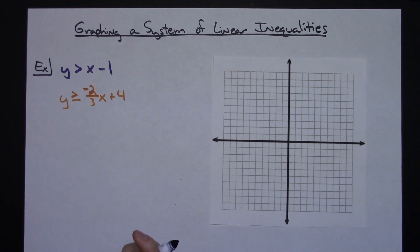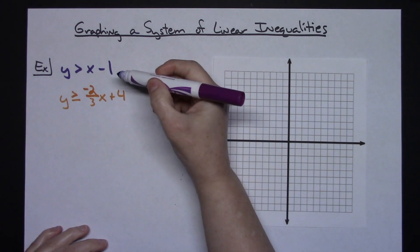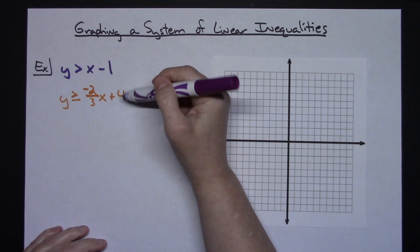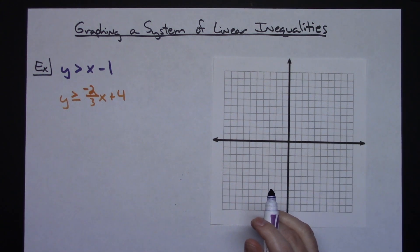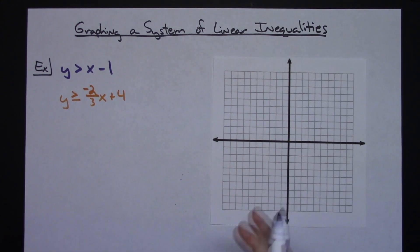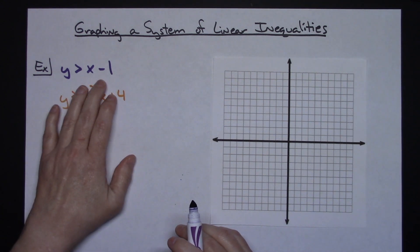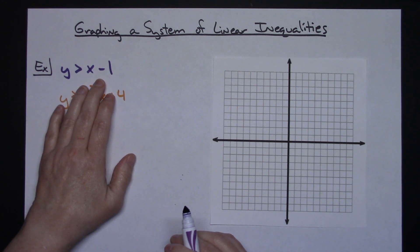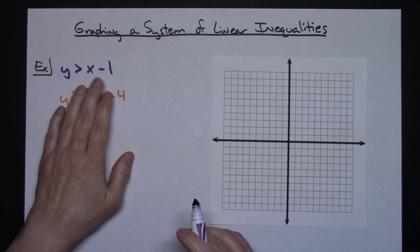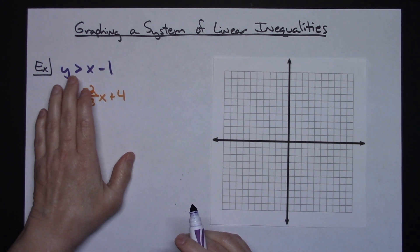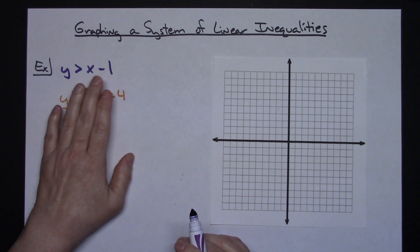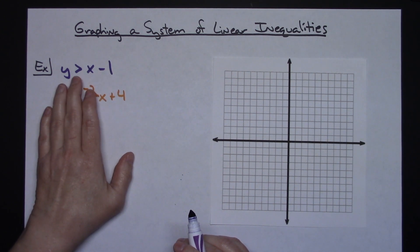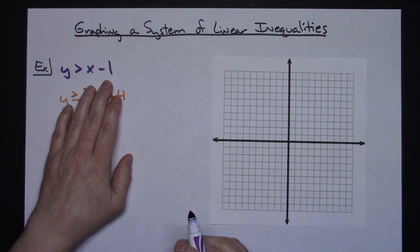Both equations are in slope-intercept form. I have color-coded them because it makes graphing a little bit easier, and if you make a mistake you'll be able to find it more easily. The first one I'm going to do in purple: it's y is greater than x minus 1.